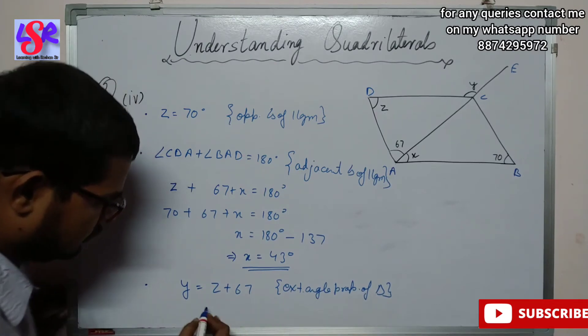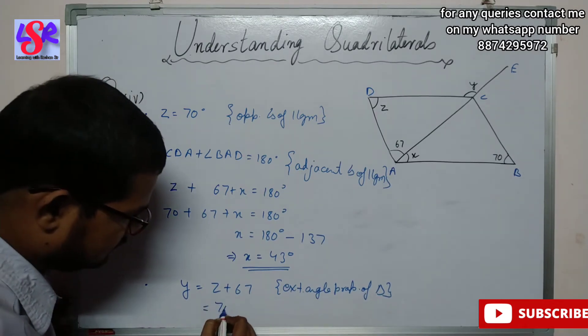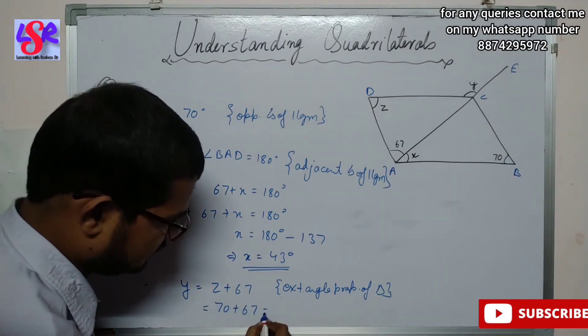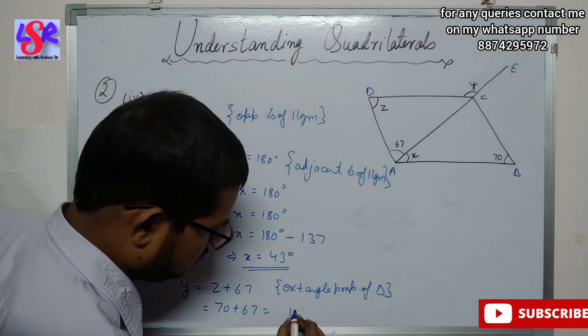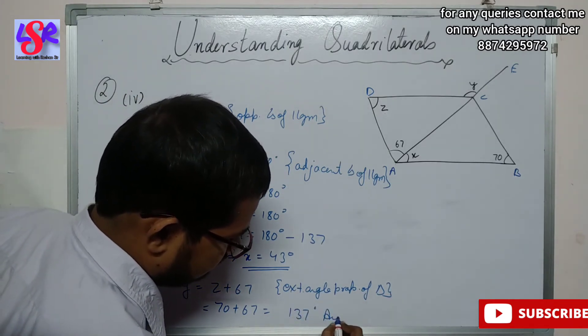So Y equals 70 plus 67, which gives Y equals 137 degrees.